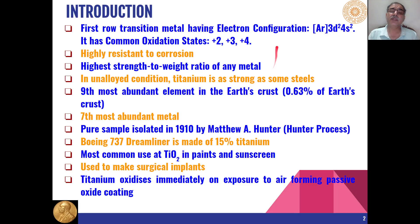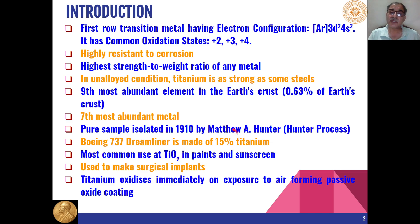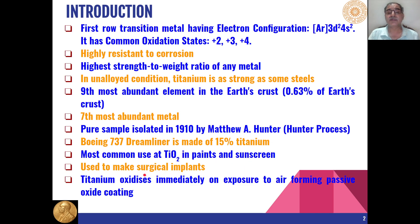Titanium compounds exist in oxidation states of plus 2, plus 3, and plus 4. Titanium is as strong as some steels and is the seventh most abundant metal. It has been used in Boeing 737, constituting about 15% titanium metal. TiO2 is used in paints and sunscreen, and titanium metals are also used for making surgical implants.